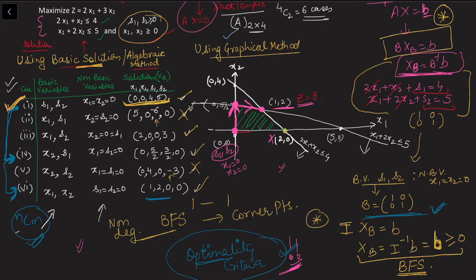We could also move in other directions — simplex always allows moving to adjacent BFS. These directions are guided by the optimality and feasibility criteria, which will be explained in the next video. Essentially, the simplex method works the same as the basic solution method, but checks only selective cases: starting from one BFS, moving to the next that improves z, and stopping when no further improvement is possible.